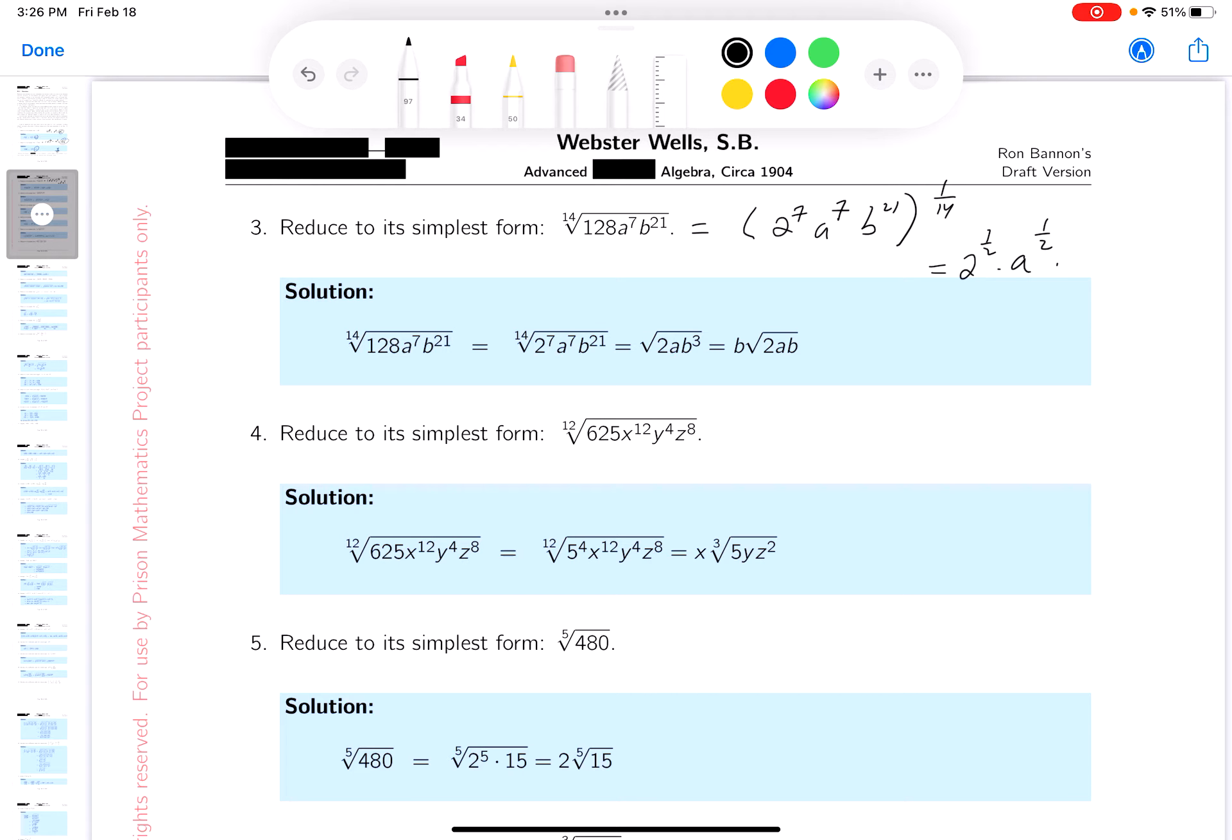And then you get, what do you get there? That's a little more complicated, isn't it? That's 21 over 14.